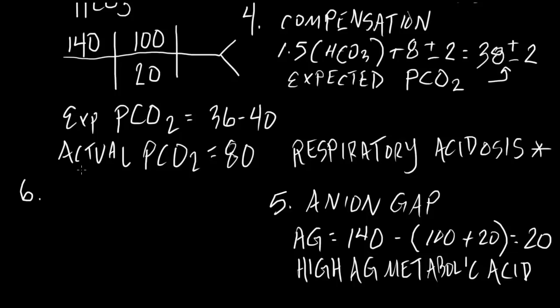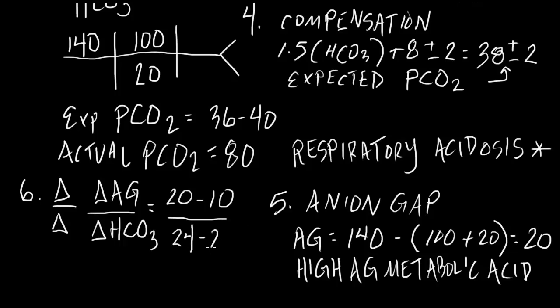So, the next step is to look at our delta-delta. And our delta-delta is the change in anion gap relative to the change in bicarb, which in this particular case is 20 less 10, which is essentially the normal anion gap, over normal bicarb 24, less the actual bicarb, which is 20. In this particular case, our delta-delta is 10 divided by 4.